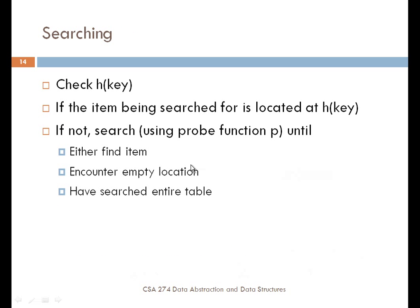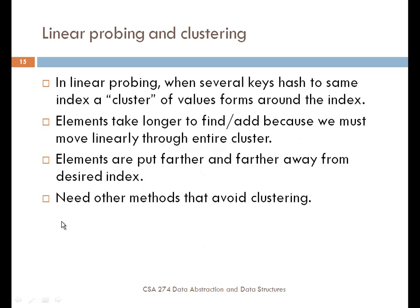When searching for something in the table, we compute the hash value based on the key and check that location in the array. If we find it there, great. If not, we search forward using the probe function — adding one each time with linear probing — until we find the item or encounter an empty location. If we've searched the entire table or wrapped all the way around without finding the item, our search is over.